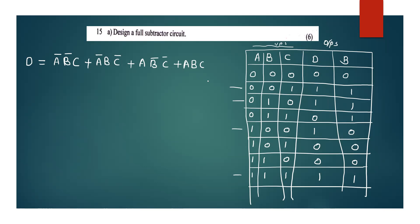We will put an expression in this. What are the common terms? A-bar, B-bar, C is equal to C. A, B, C — this is C equal to C.